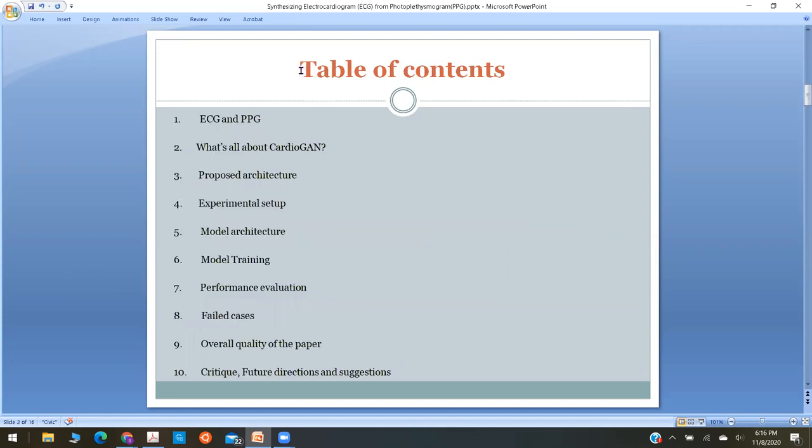The table of contents: I'll be discussing the typical ECG and PPG waveforms, the proposed CardioGAN architecture in the paper, the experimental setup that was used and how the model was trained. Finally, how the evaluation of the performance of the model was done, a few failed cases that were discussed in the paper, and the overall quality of the paper and future directions and suggestions.